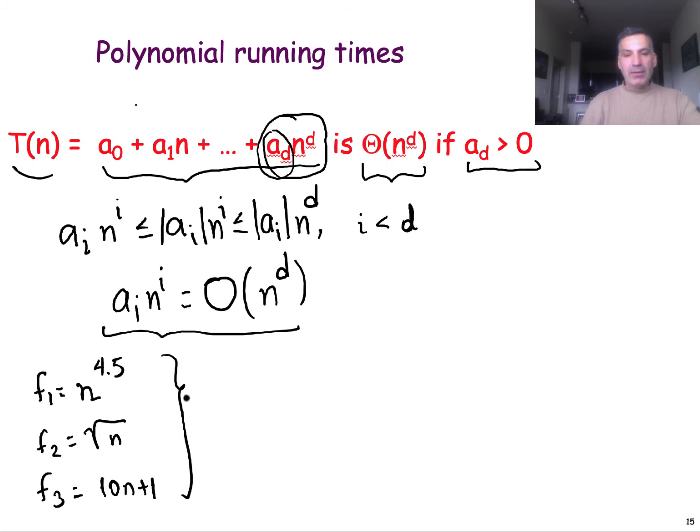As we discussed, what really matters in all of these functions is the highest exponent. This one can be written as big O n^4.5. It would be the same if we had a proportionality constant here, say 4. The second function can be written as big O of n^(1/2), and the third one can be written as big O of n.